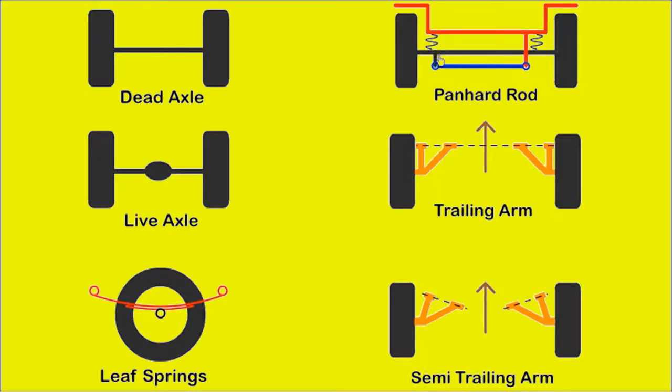With an independent rear suspension, there is no axle between the wheels. The wheels can move independently of each other. Examples include trailing and semi-trailing arms.